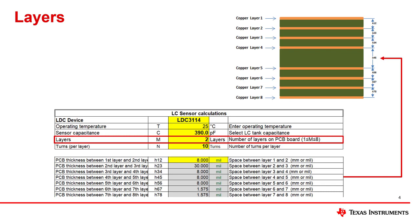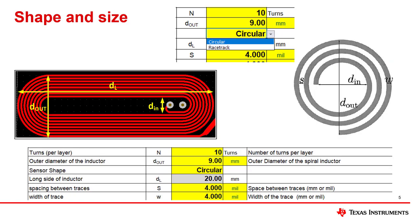The next set of inputs concern the coil shape and size. The sensor shape determines whether calculations will run using a circular coil or a racetrack coil. The racetrack coil uses the shorter side as the outer diameter input, since this is the distance that primarily determines how the sensor will couple to the target. The long side distance becomes an option once racetrack is selected. Racetrack coils are useful when the coil space is limited and higher inductance is needed compared to a circular coil.